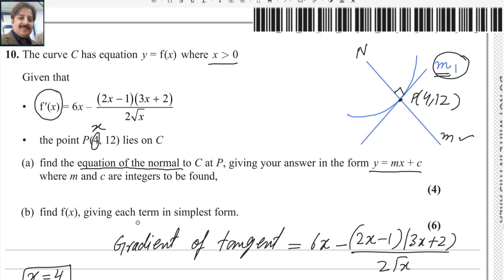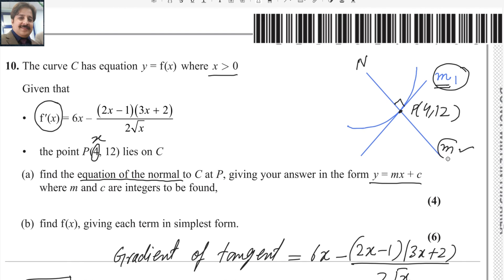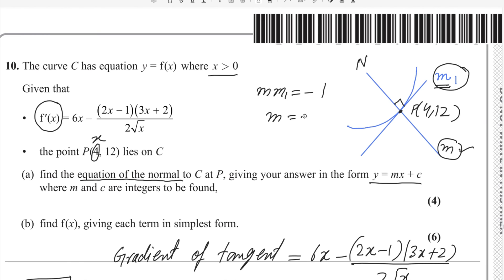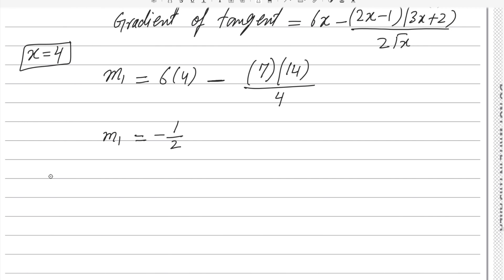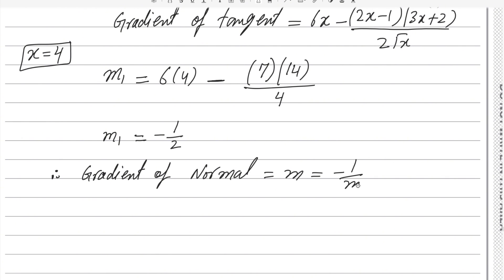You need to find the gradient of the normal, represented by m. The product of the gradients of two perpendicular lines is always equal to negative 1: m times m1 equals minus 1. To find one gradient when the other is known, take the negative reciprocal. Therefore, the gradient of the normal m equals minus 1 over m1. Applying this — the negative of the reciprocal of minus 1/2 — gives m equals 2.